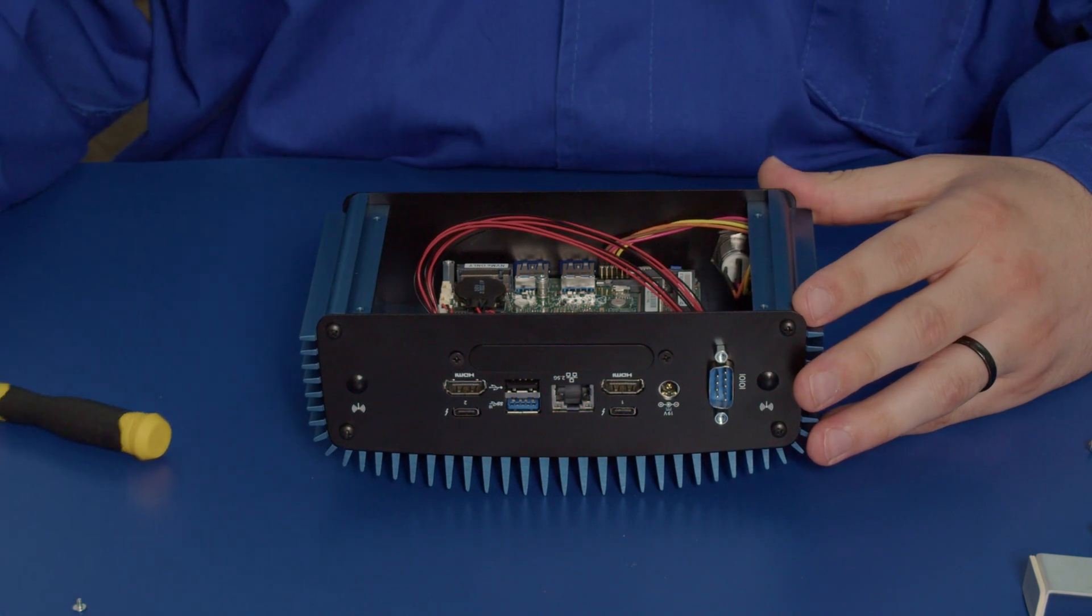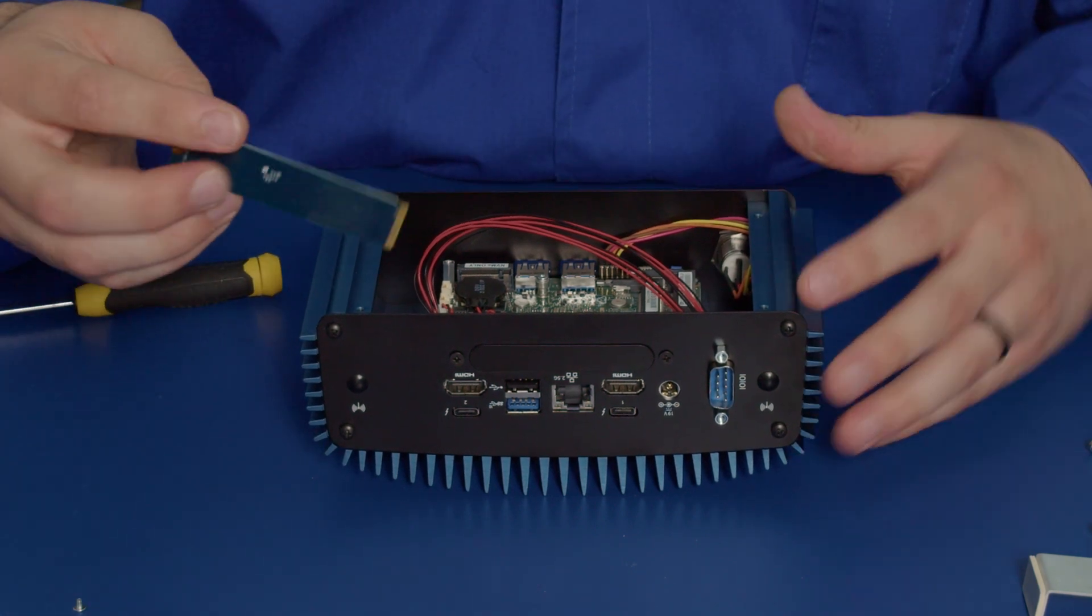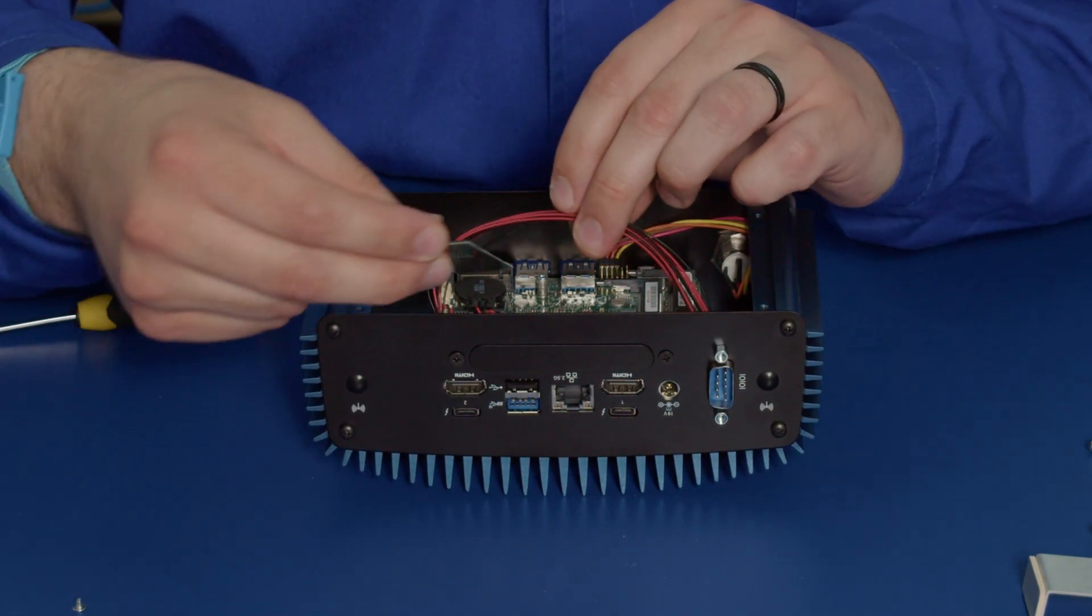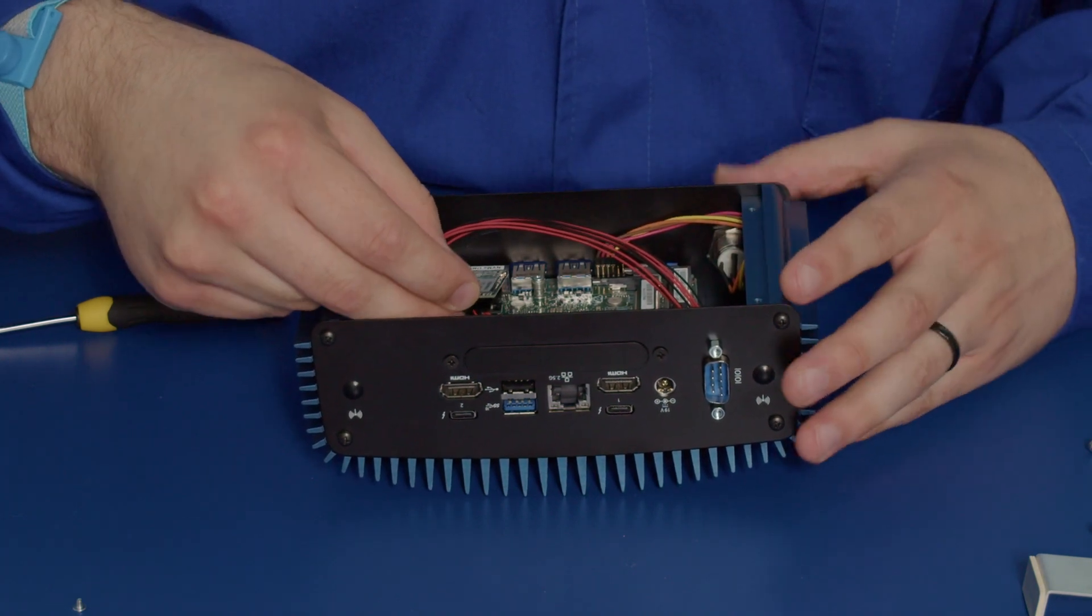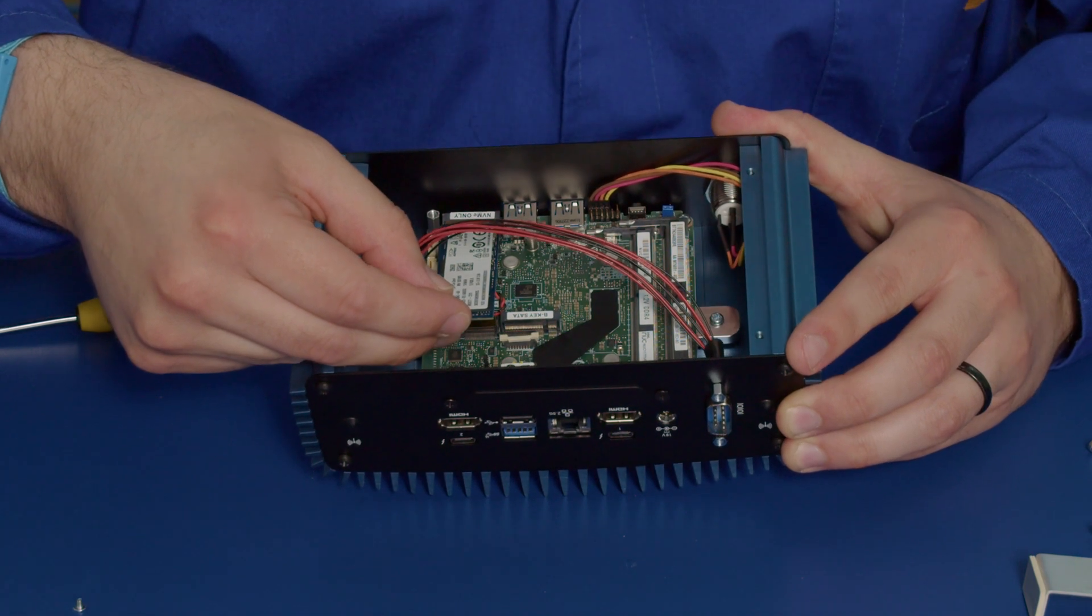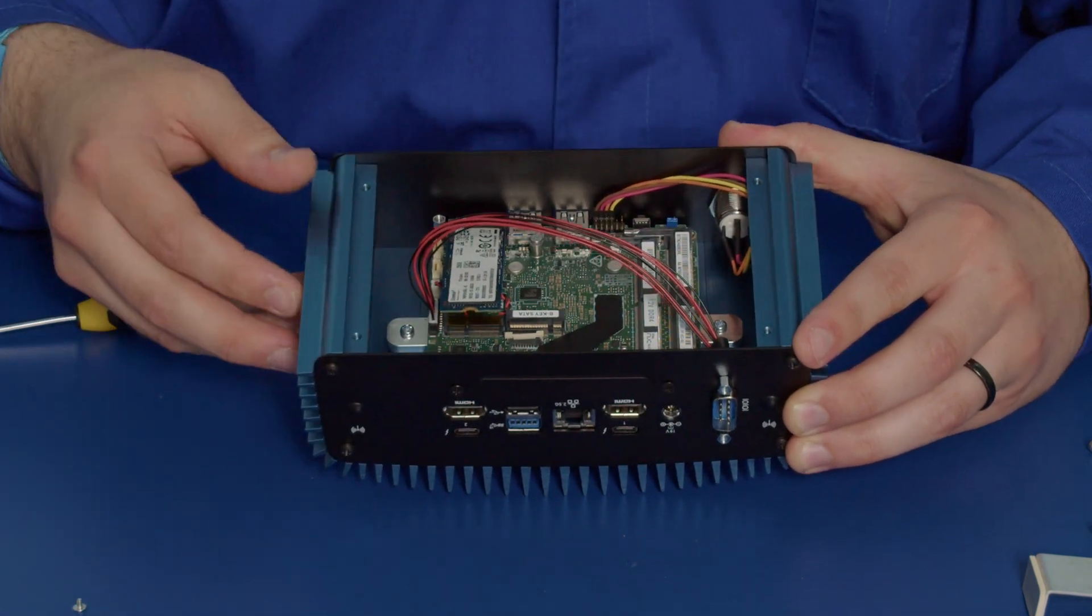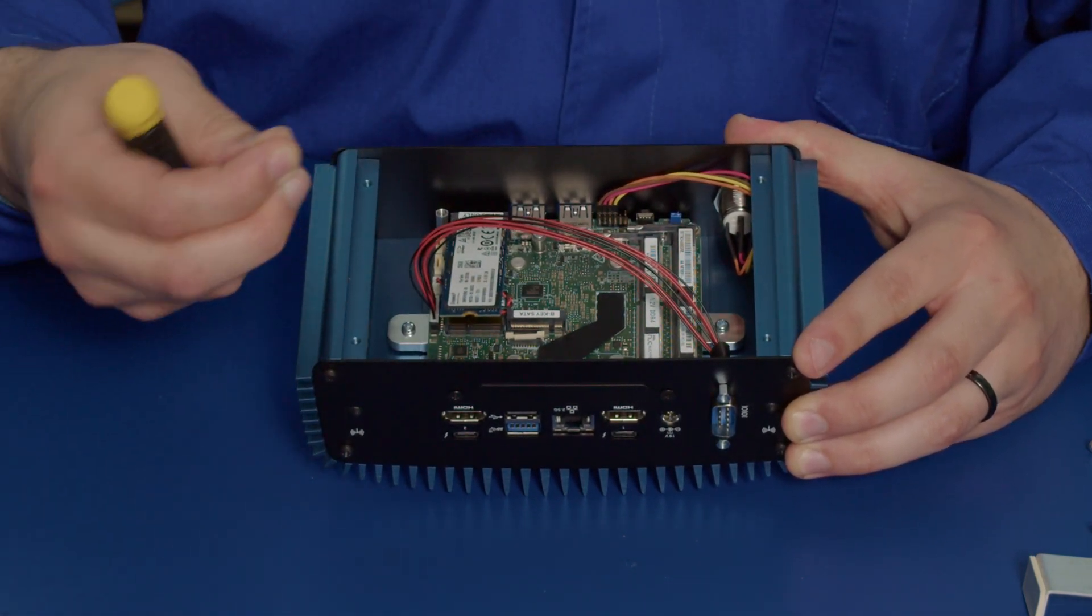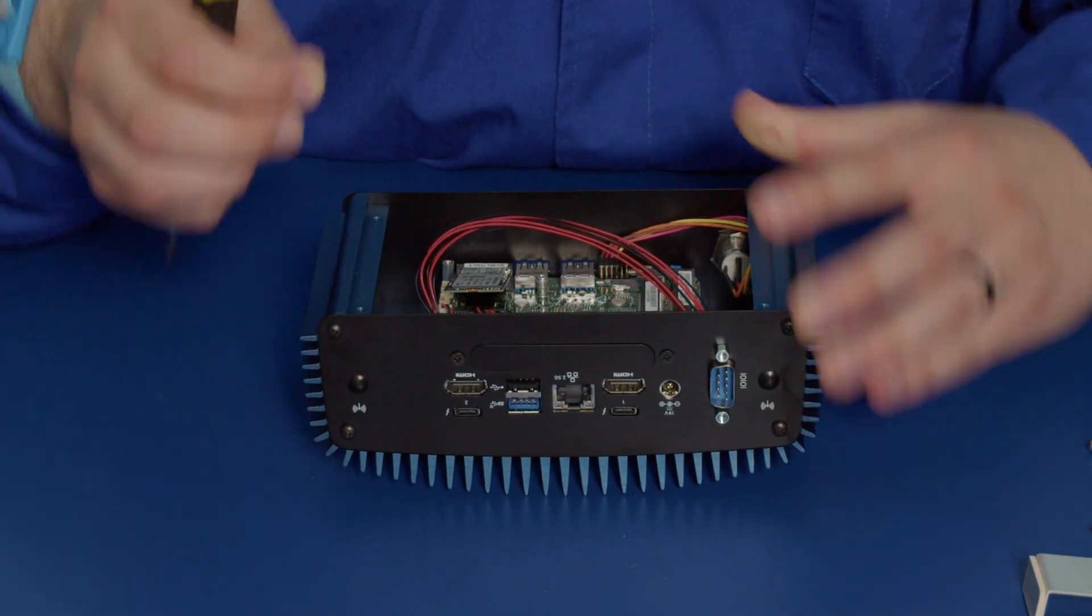So to install your new SSD you take the new one and you slot it underneath this wire and you push it into the M.2 slot at about a 30 degree angle just like you took out the previous SSD. And you take your SSD M.2 screw and you screw that down.